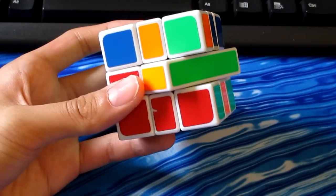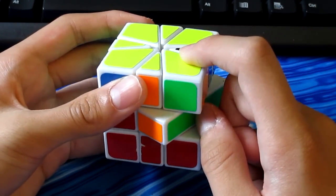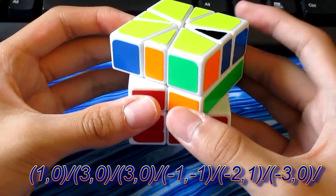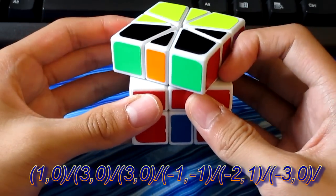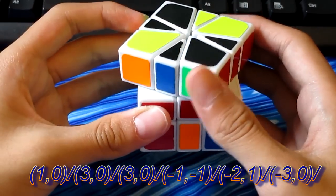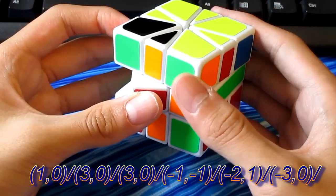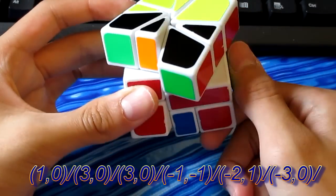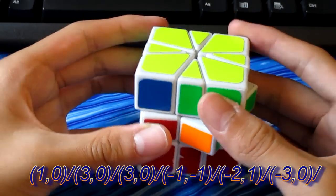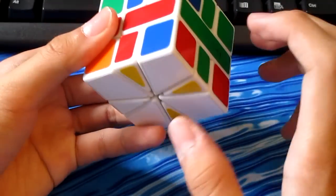Edge orientation requires one algorithm. This algorithm will theoretically swap this edge, the top right edge, and the bottom back edge. One comma zero slash three comma zero slash three comma zero slash negative one comma negative one slash negative two comma one slash negative three comma zero slash. Using this algorithm, we can solve any edge orientation case on the square one.